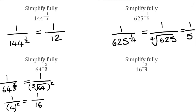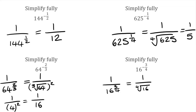Moving on to this next one, we've got 16 to the power of negative 3 over 4. Again, we can write this as 1 over 16 to the power of positive 3 over 4. This time we're going to have 1 over — because we've got a 4 on the bottom, we're going to find the fourth root of 16, and then once we find that, we have to cube it. The fourth root of 16 is 2, which we then cube. So this simplifies to 1 over 2 cubed is 8, giving a final answer of 1 over 8.